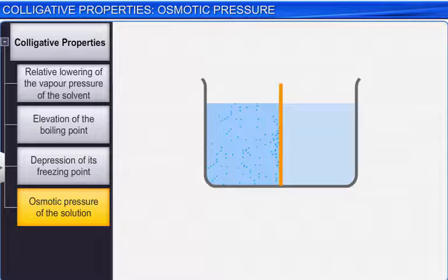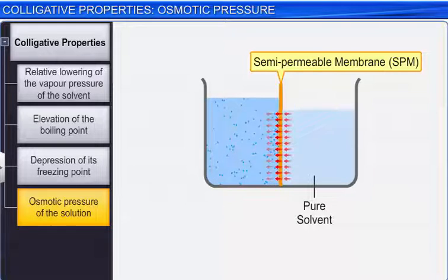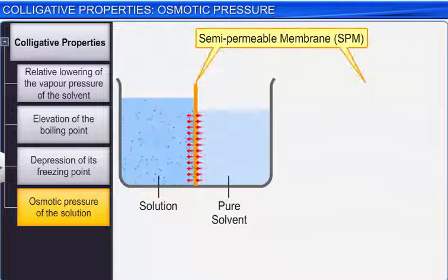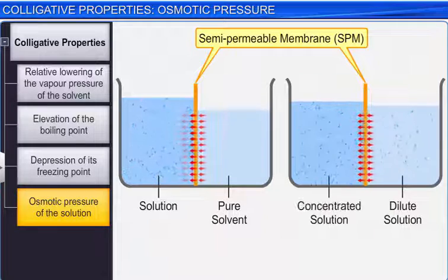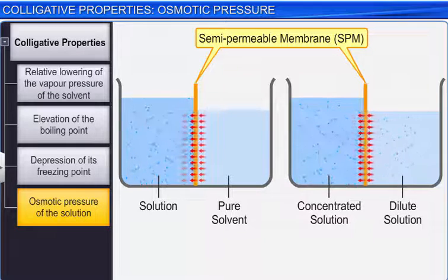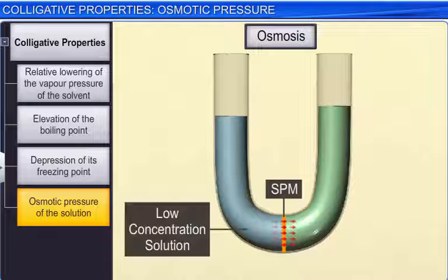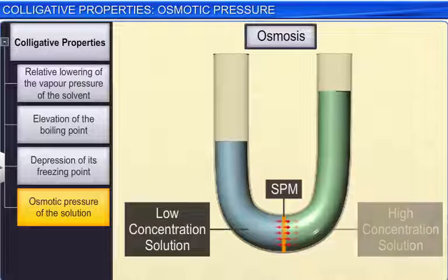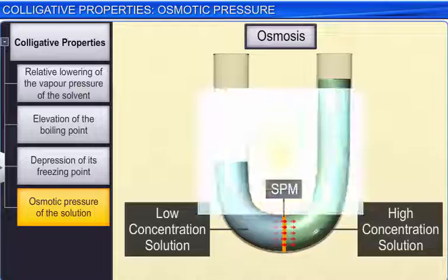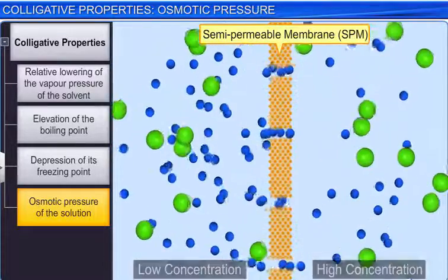Osmosis can be defined as the spontaneous flow of solvent through a semi-permeable membrane from a pure solvent to a solution, or from a dilute solution to a concentrated solution. It is important to note that osmosis drives solvent molecules through a semi-permeable membrane from low solute concentrations to high solute concentrations. Osmosis ends when the solute concentration becomes equal on either side of the membrane and equilibrium is attained.